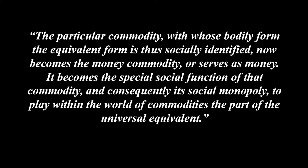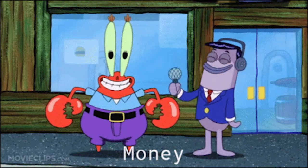The particular commodity with whose bodily form the equivalent form is thus socially identified now becomes the money commodity, or serves as money. It becomes the special social function of that commodity, and consequently its social monopoly, to play within a world of commodities the part of the universal equivalent. Of course, outside of our theoretical imagining, accidental footballs don't actually govern our value relations — we don't just pick one at random and decide this is it. In the material world, we have a different commodity that serves this function: money.